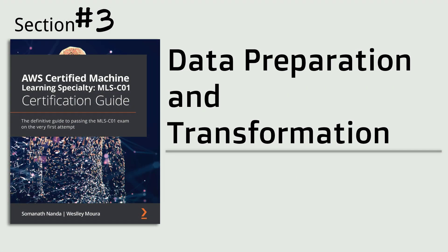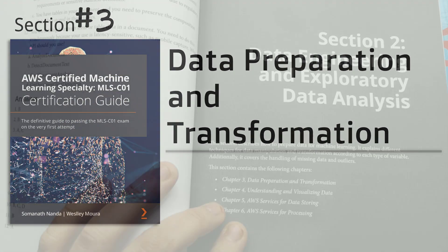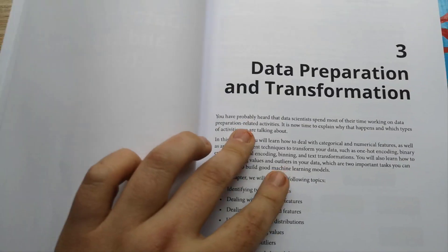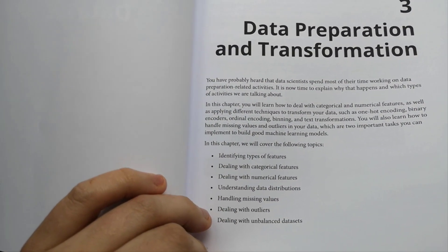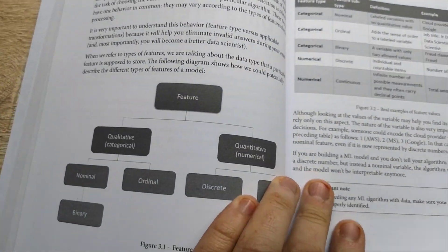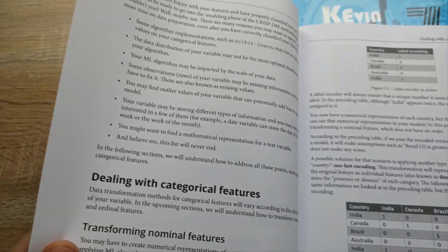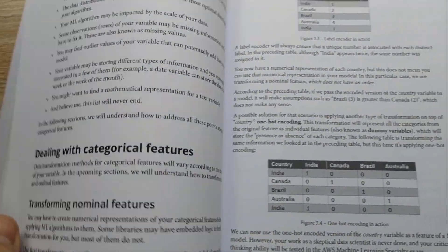It is about data engineering and exploratory data analysis. And this section describes how to prepare data for machine learning. It explains different techniques for data manipulation and transformation according to each type of variable. Additionally, it covers the handling of missing data and outliers.